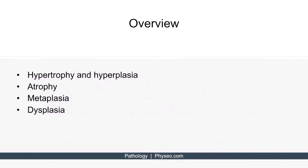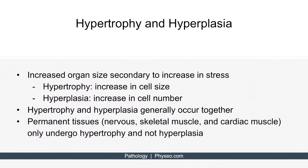Here's our overview slide. Let's begin by discussing hypertrophy and hyperplasia. Hypertrophy and hyperplasia refer to an increase in organ size secondary to increase in stress. Generally speaking, an organ can increase in size in three ways. One, by increasing the size of cells, and this is called hypertrophy.